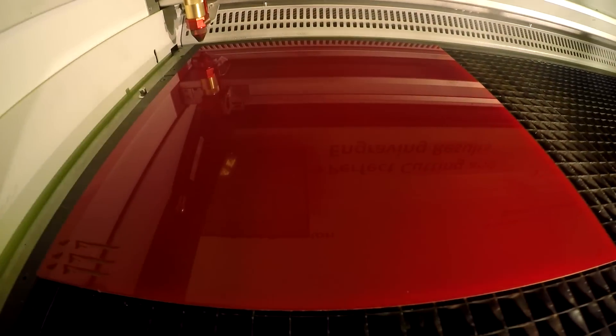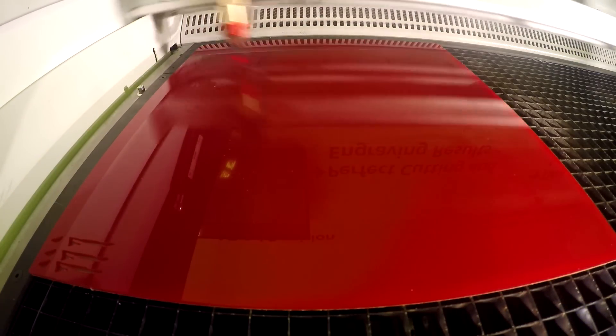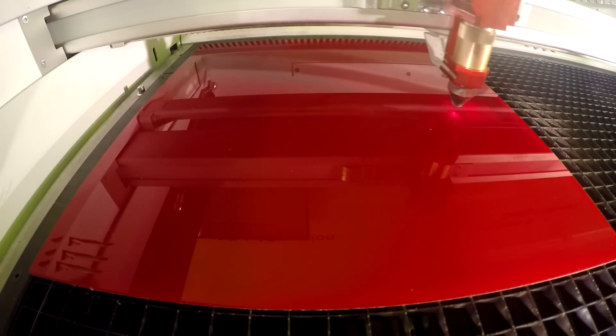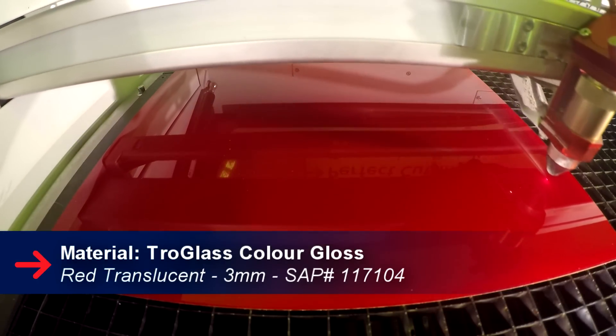For our base, we put our 3mm thick Choe Gloss Color Gloss red, with 3mm adhesive on the bottom. We placed it into the Speedy 400 and cut out our design.